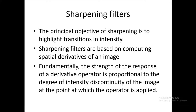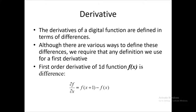As we define an image in terms of a digital function, the derivatives of digital functions are defined in terms of differences. The basic difference definition of the first-order derivative of any function f(x) is: df/dx = f(x+1) - f(x), the difference between two neighboring pixels. Here f(x) is the current pixel and f(x+1) is the next or succeeding pixel, so we call this the forward difference.